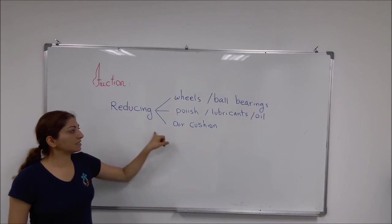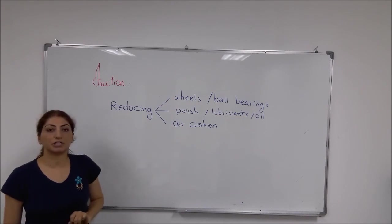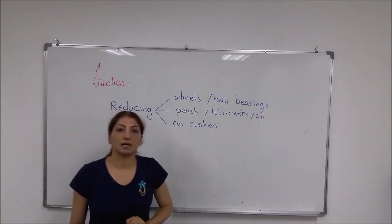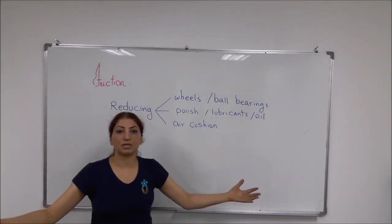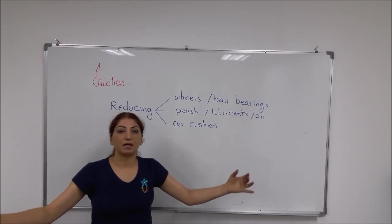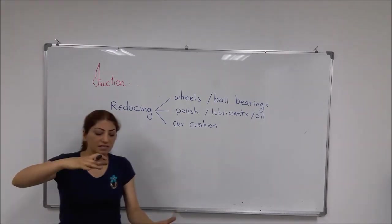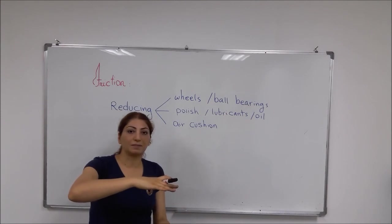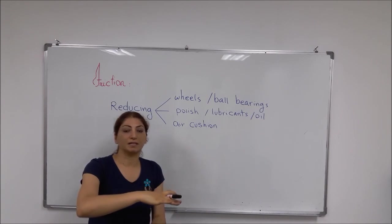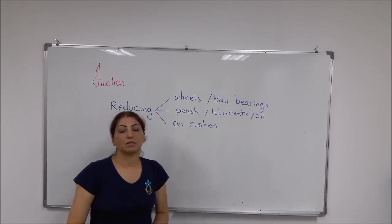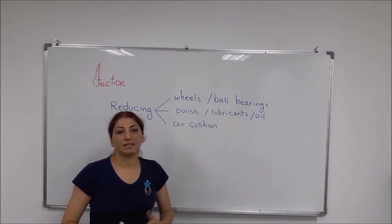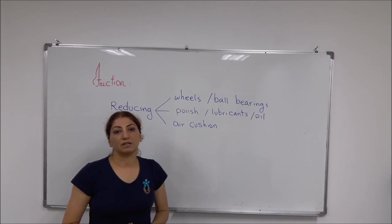The next method is to reduce friction by creating an air cushion, like hovercrafts that move on water. The cushion is filled with air and creates a barrier or boundary between the surface of the water and the bottom of the boat, allowing it to move easier with less friction.